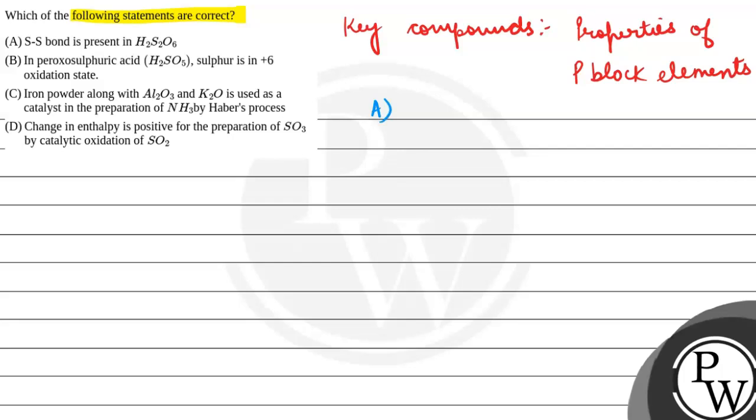What is this? The S-S bond is present in H2S2O6. First of all, we need to make a structure of H2S2O6. It's like this. Here we have a sulfur-sulfur bond present. That means, what is this option? Correct.